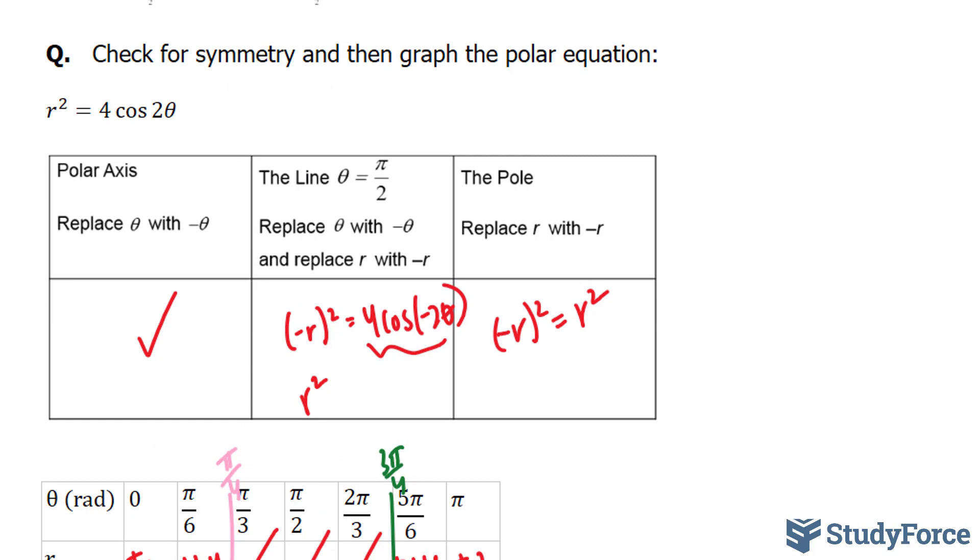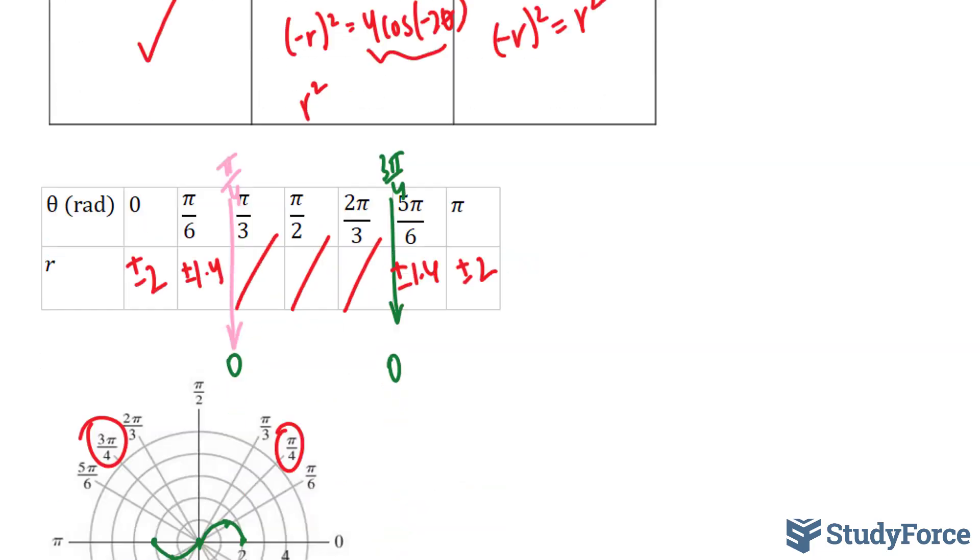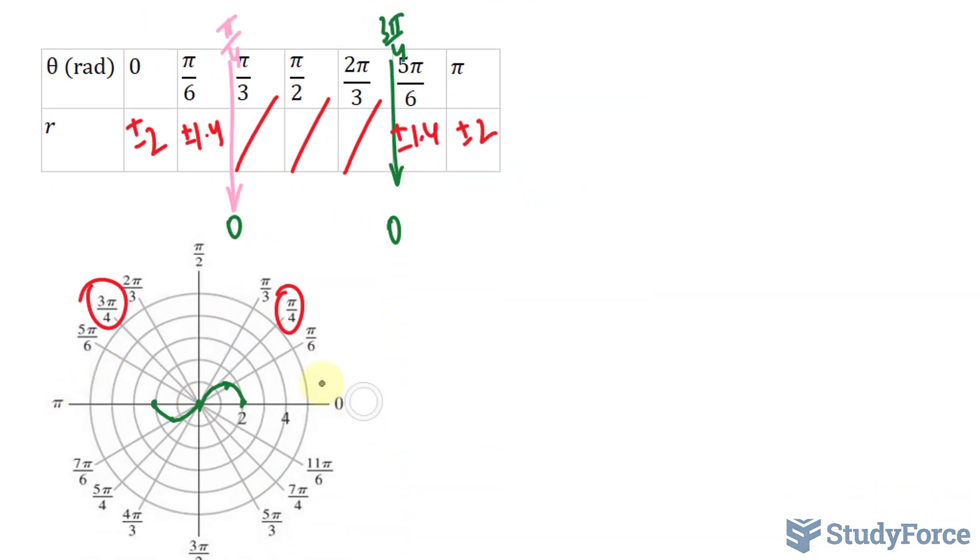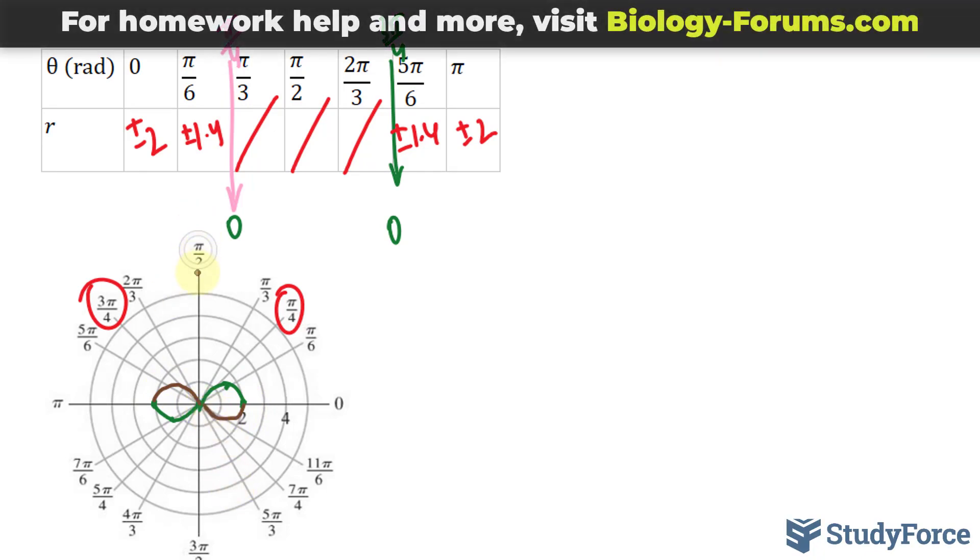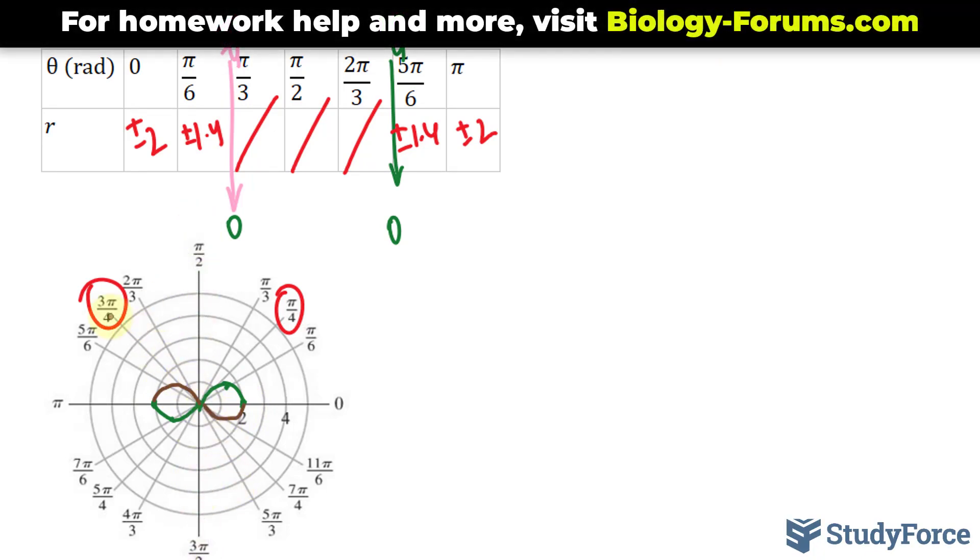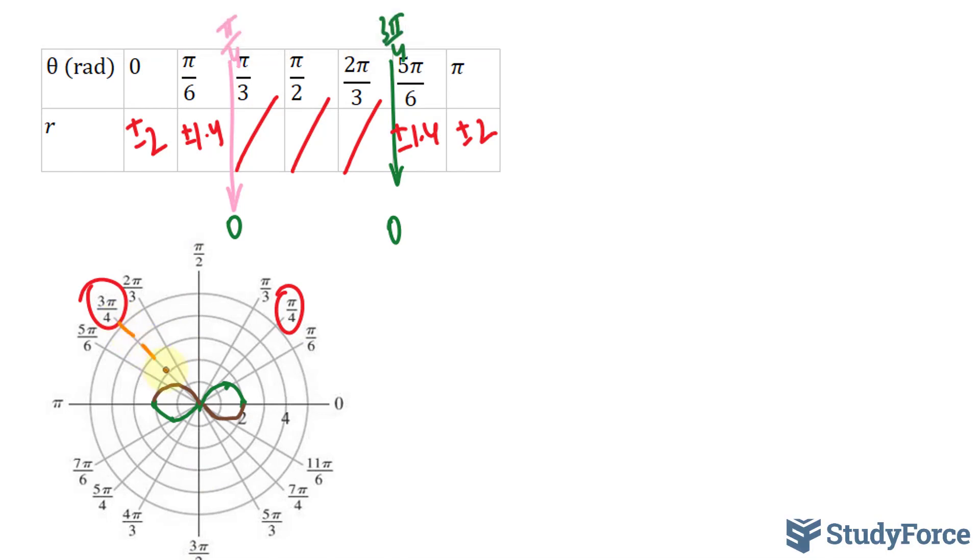And since we have symmetry everywhere, focusing on the polar axis, you'll have something that looks identical to this, and identical to this part of the curve. Putting a mirror down the vertical axis also shows symmetry. And putting a mirror along this part also shows symmetry.